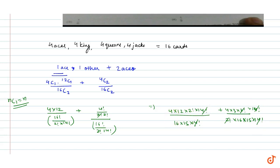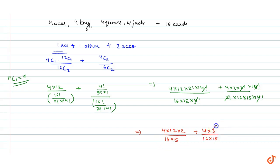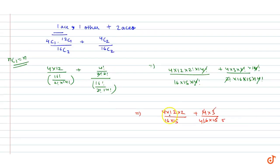हमें पता है 2! की value 2 होती है। तो यह हो जाएगा: (4×12×2)/(16×15) plus (4×3)/(16×15)। यहां देखते हैं — four times cancel होगा, three times और five times। So we get 2/5 plus 1/20।